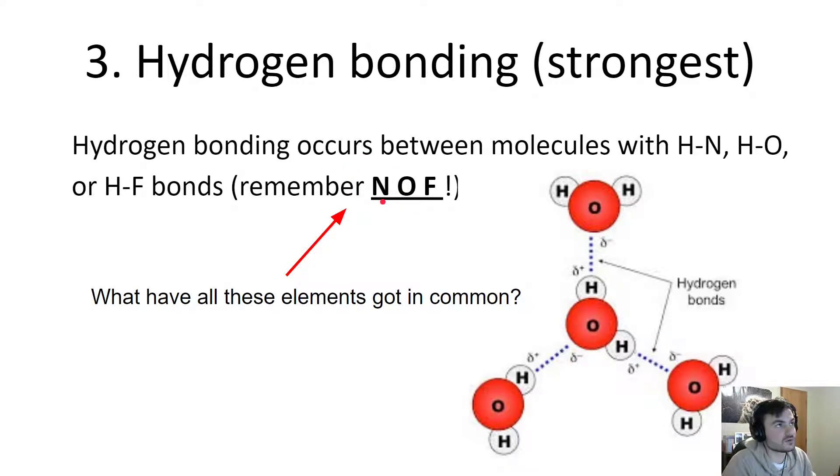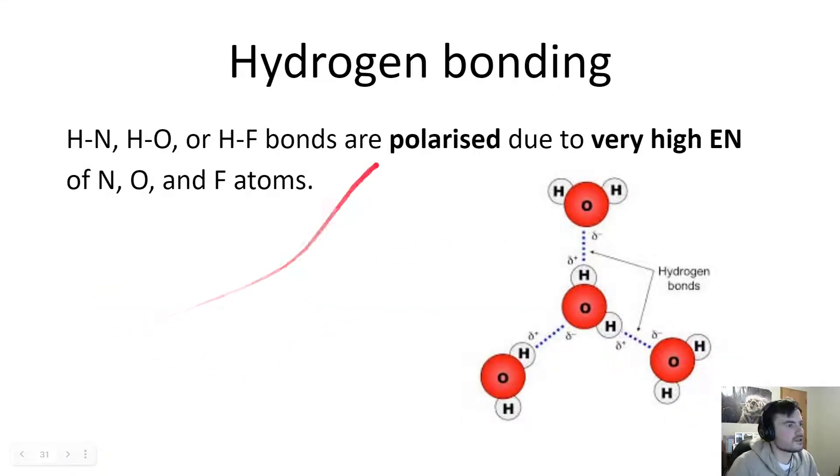And this is just to do with the atomic size. Nitrogen is really small, so it can get nice and close to these bonding pairs of electrons. Bonding pairs of electrons within the bond here. These bonds are very polarized due to very high electronegativities of nitrogen, oxygen, and fluorine atoms.